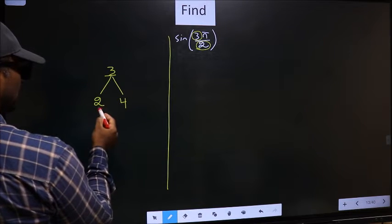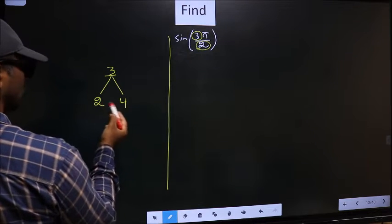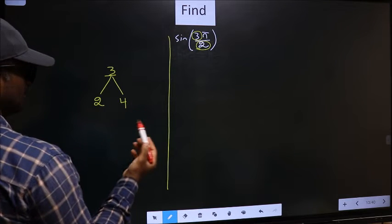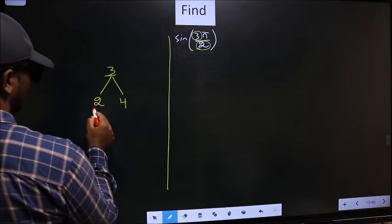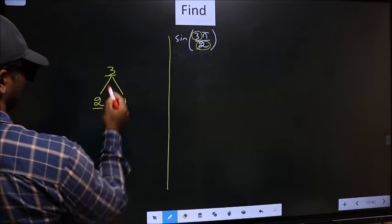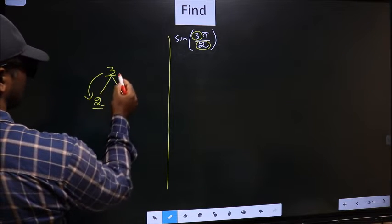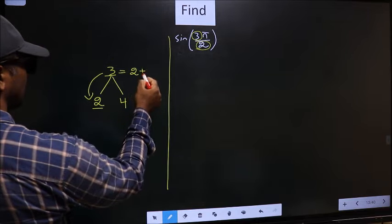That is 2 and 4. 3 is close to which multiple? It is close to both of them. So whichever number you take, you get the same. So let's say I take 2. So now 3 should be written as 2 plus 1.